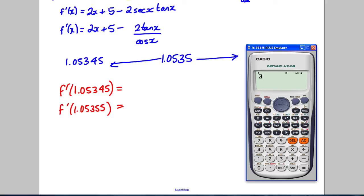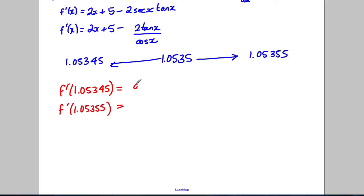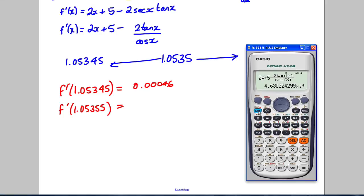And we're going to substitute in 1.05355. And we're going to get this answer here, which is 0.00046. So 0.00046. And then let's substitute in 1.05345 and you get a negative answer, negative 0.0022.